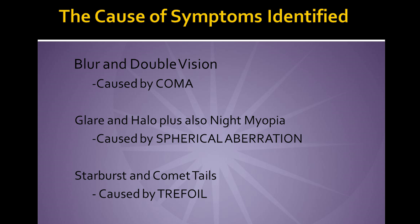Spherical aberration causes glare and halo, and sometimes causes night myopia. So if a patient complains of these symptoms, the cause is spherical aberration.